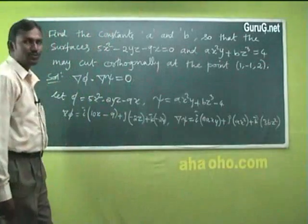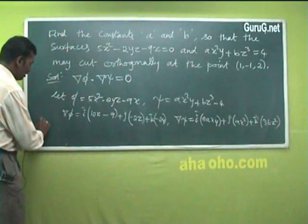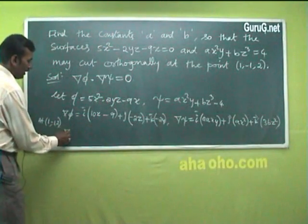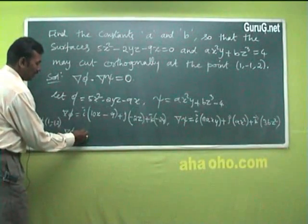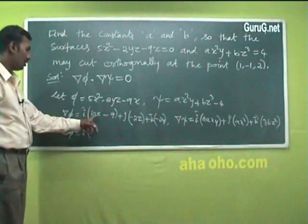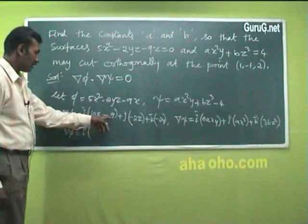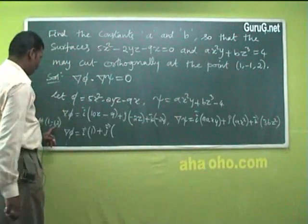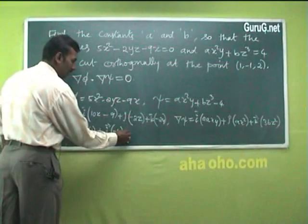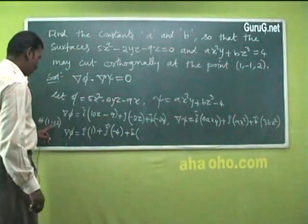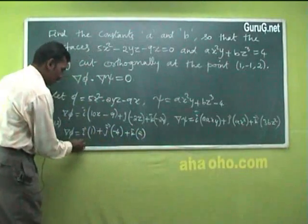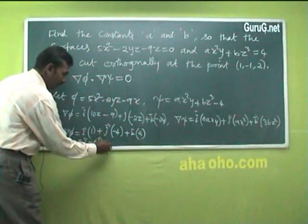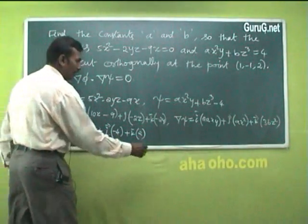At the point (1, −1, 2): del φ = i·(10(1) − 9) + j·(−2(2)) + k·(−2(−1)) = i·(1) + j·(−4) + k·(2) = i − 4j + 2k.